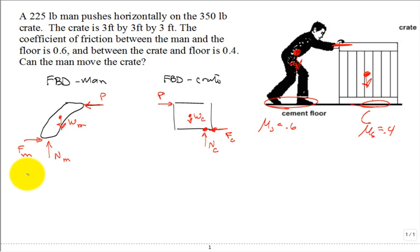From the free body diagram of the man, we do the sum of the forces in the Y equal to zero, and we find that the normal under the man is equal to the weight of the man.